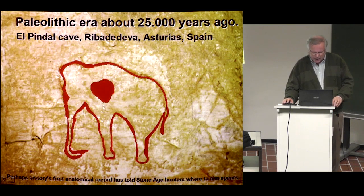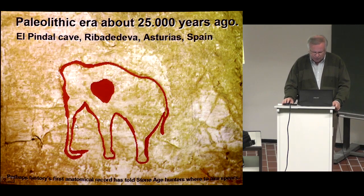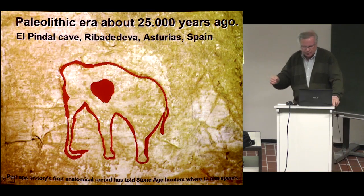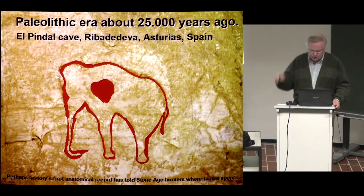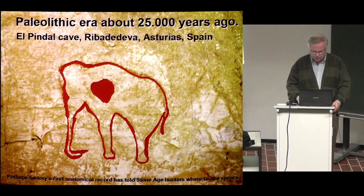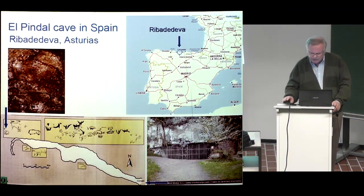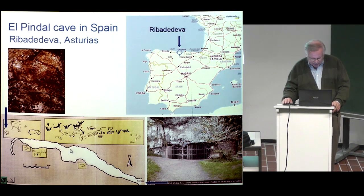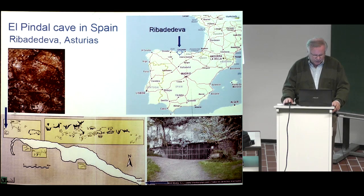I show it more clearly. The only anatomical structure in this painting of a mammoth was the heart. 25,000 years ago — quite a long time ago. This cave is in Spain, in Riba de Deva. That is the opening of the cave — it is a long, long cave — and at the end of the cave here is the painting of the mammoth.